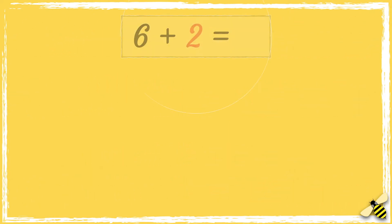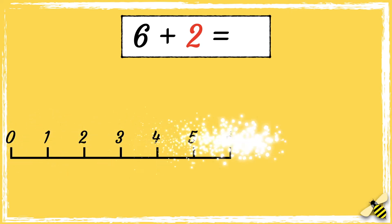Here is a number sentence. 6 add 2. Let's use the number line to count on 2 more. We start from 6, and because we're adding 2, we need to jump 2 digits to the right.